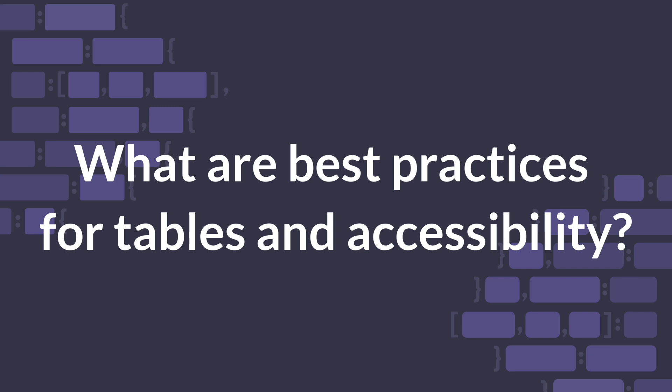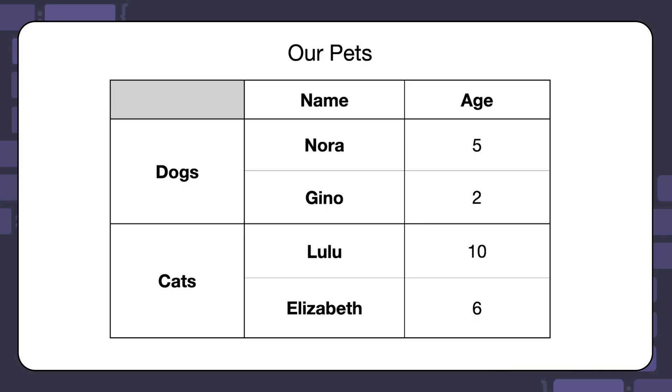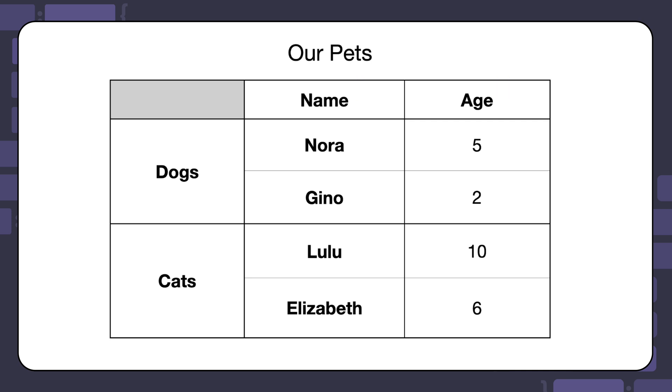What are best practices for tables and accessibility? When we see a table, we immediately start making visual associations between the data and the headers. For example, let's say that this table is a representation of our pets. We have two dogs and two cats, and the table is showing us their names and ages. While a sighted person may be able to understand the relationships in this table, making the connection between the values and the headers is much harder for people who use screen readers to navigate the table.